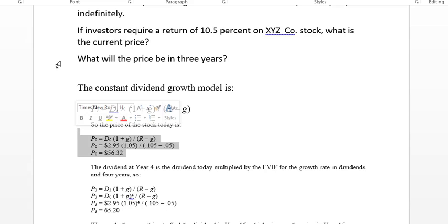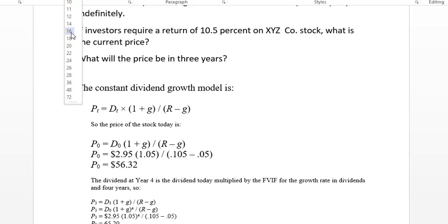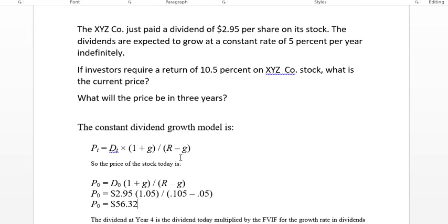So the way that the calculation works out looks like this. We put the equation in place. It's $2.95 which is what we've got from the equation, $2.95 per share, times 1.05 which is 1 plus G. So that's a constant rate of 5%, over what we're required, the 10.5%.